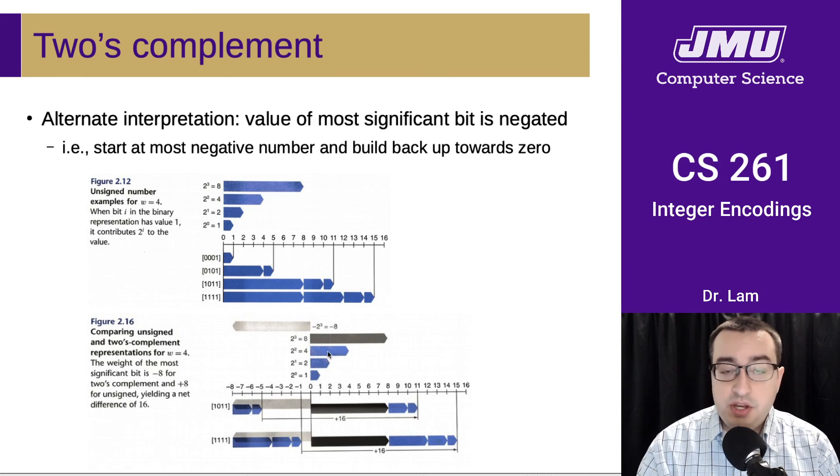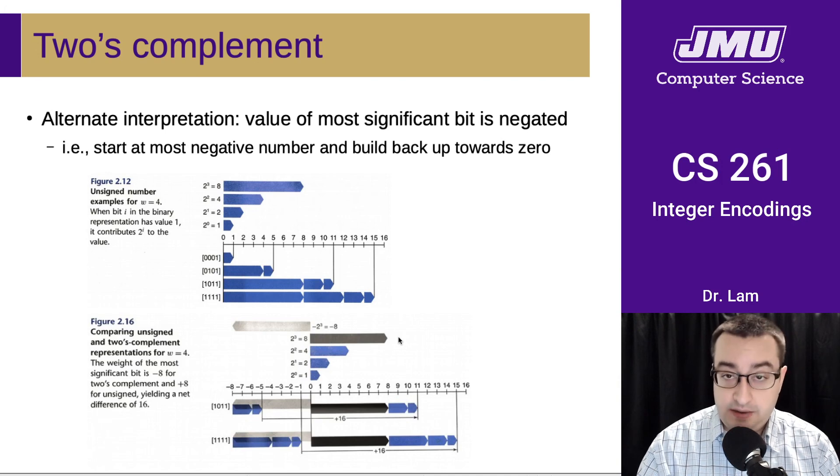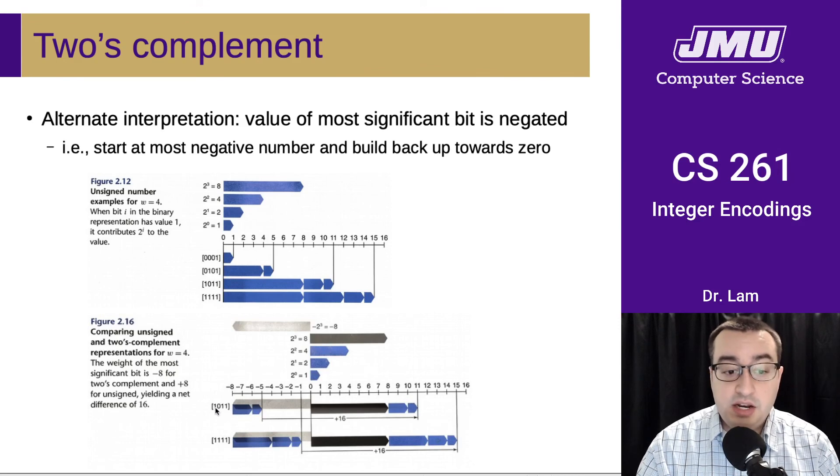So all the other bits are still worth positive 1, 2, and 4, but that bit, that most significant bit, is now worth negative 8. And so it works out if you think about starting at negative 8, if that bit is set, and then you add,